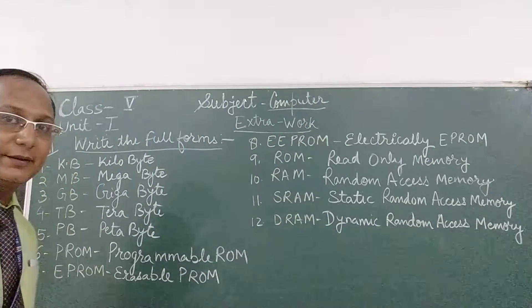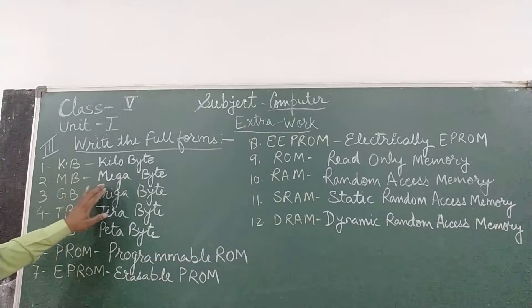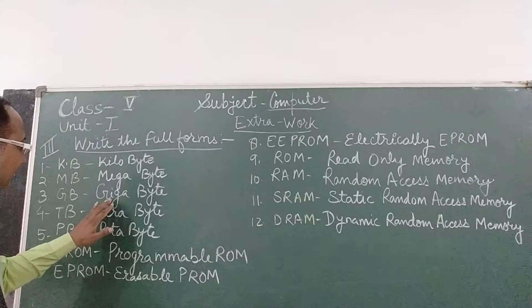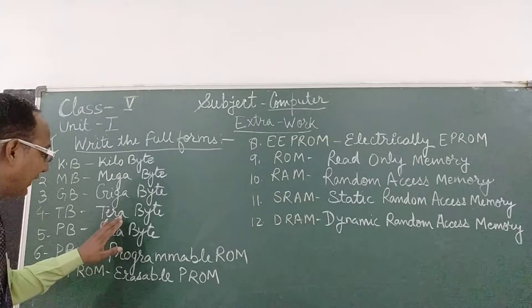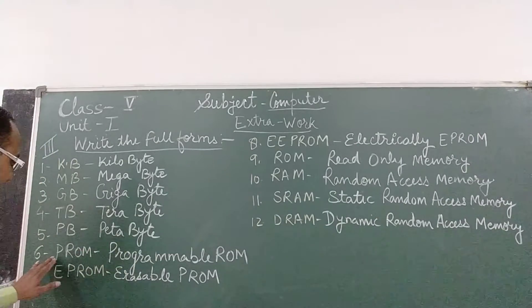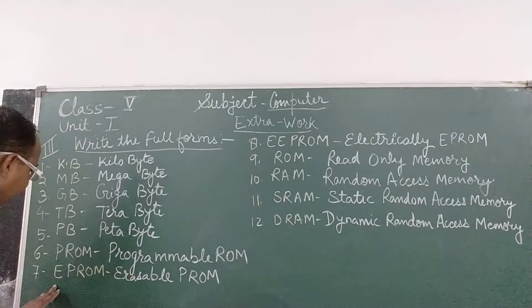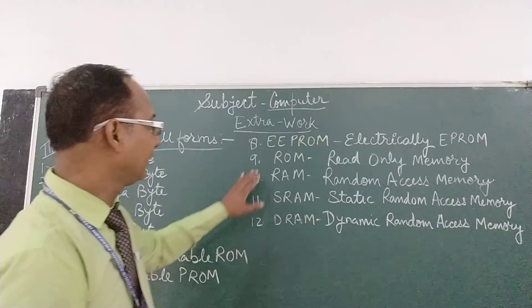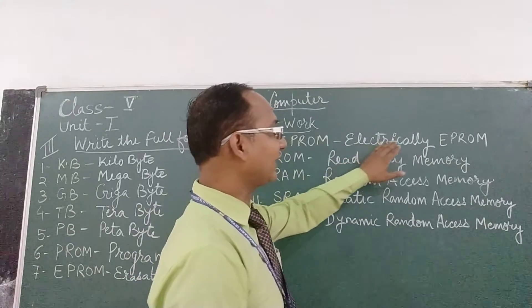So see, first is KB, full form is Kilobyte. Second is MB, full form is Megabyte. Third is GB, full form is Gigabyte. Fourth is TB, full form is Terabyte. Fifth is PB, full form is Petabyte. Sixth is PROM, that is programmable ROM. Seventh is EPROM, full form is Erasable PROM, that is Electrically EPROM.